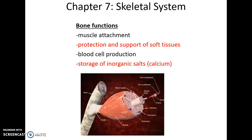The bones function as attachment sites for muscles, which of course allows movement. The bones are also protective and able to support soft underlying tissues, such as the hard skull around the brain. Bone also functions in blood cell production — all blood cells are produced in the red bone marrow — and bones also store inorganic salts, especially calcium.